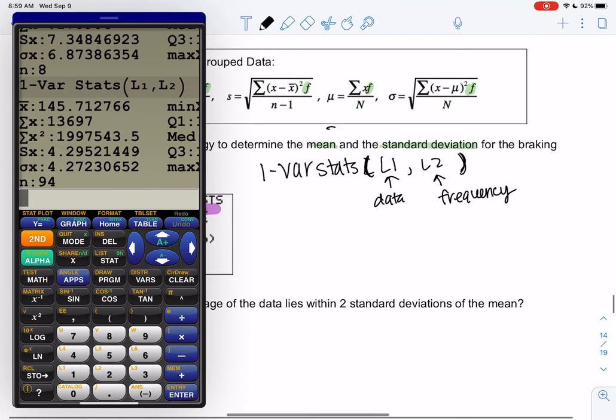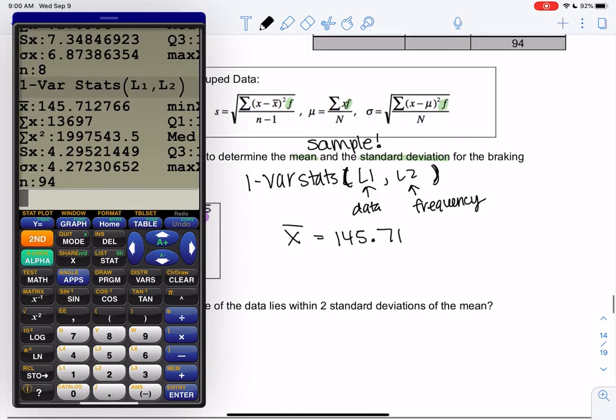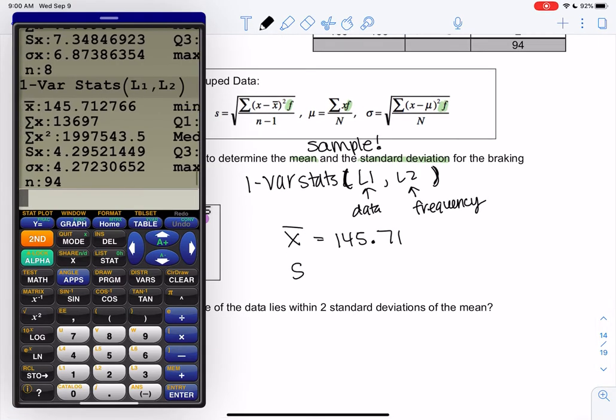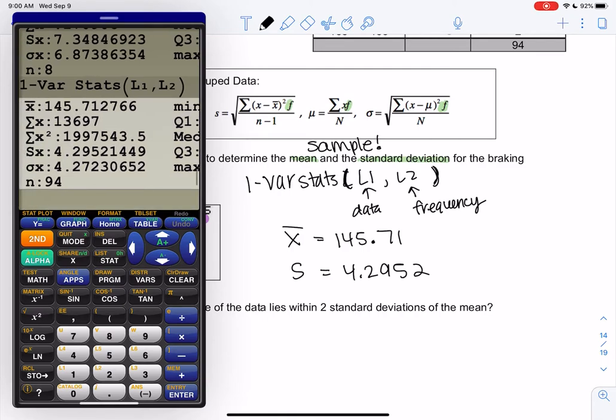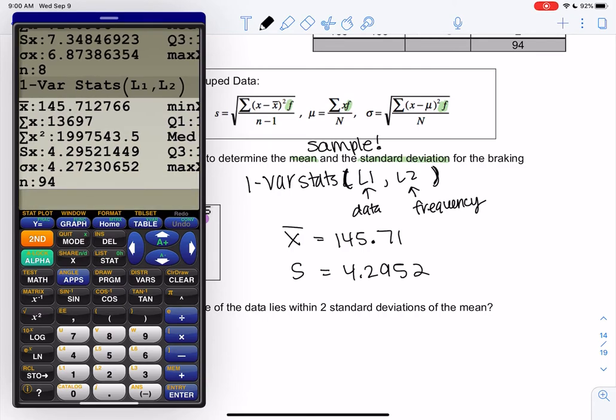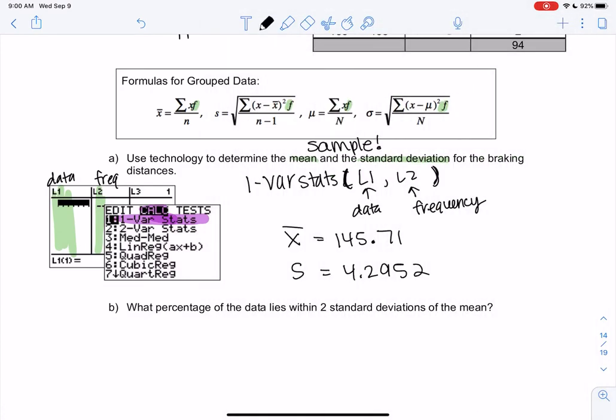This was a sample. Remember, it was only 94 SUVs, not all SUVs. So X bar would be 145.71. And S is right here, 4.2952. If this were a population, I would use 4.2723. Alright, so let's do that.